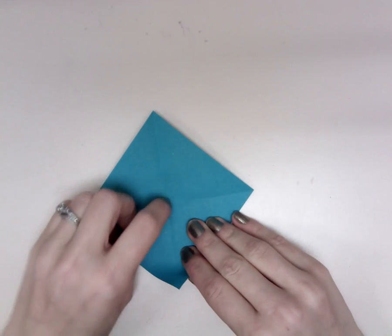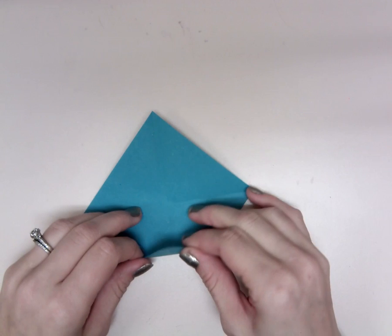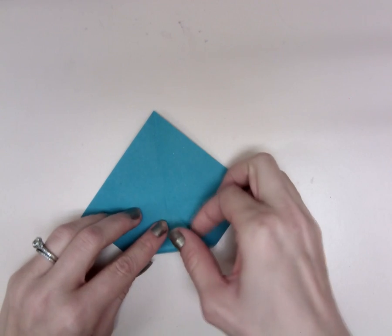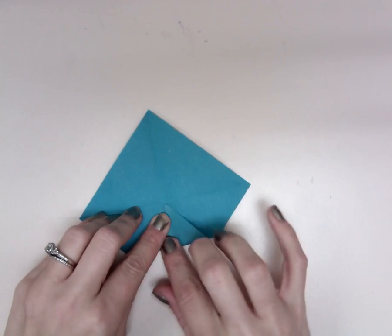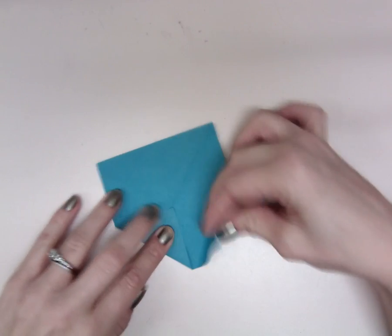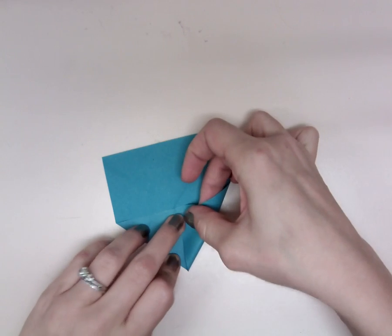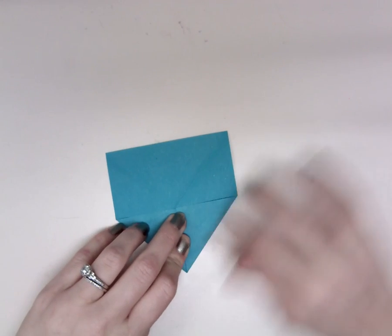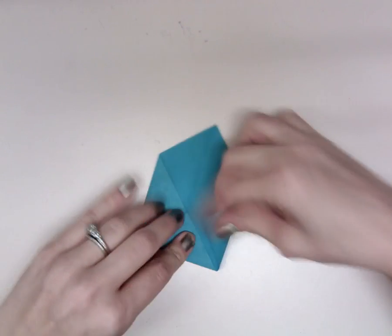So what you're going to do is use that X where it meets right in the middle. You're going to take each corner and fold it into the middle. You do have to be precise when doing this, so you can't just overlap things. Try to make it as neat as possible, lining it all up with that middle.